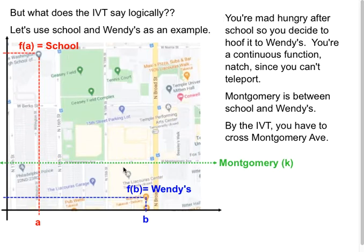So here's school. Thank you, Google Maps. And here's Wendy's. So we're going to call f(a) school, and we're going to call f(b) Wendy's. So you're mad hungry after school and you decide to hoof it to Wendy's.